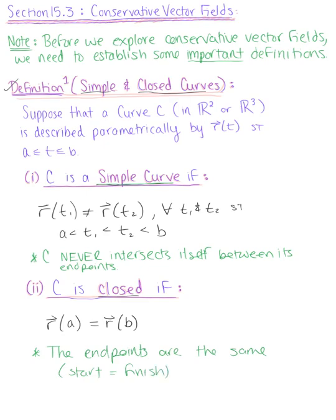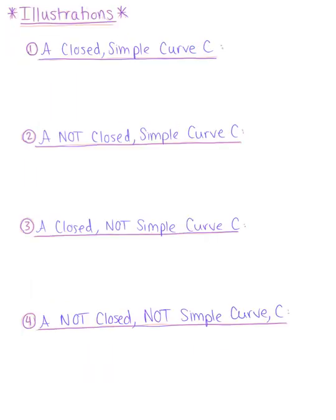Let's look at some illustrations of these simple and closed curves. Illustration number one: a simple closed curve C looks something like this. It's never intersecting itself, and the start and finish points are the same.